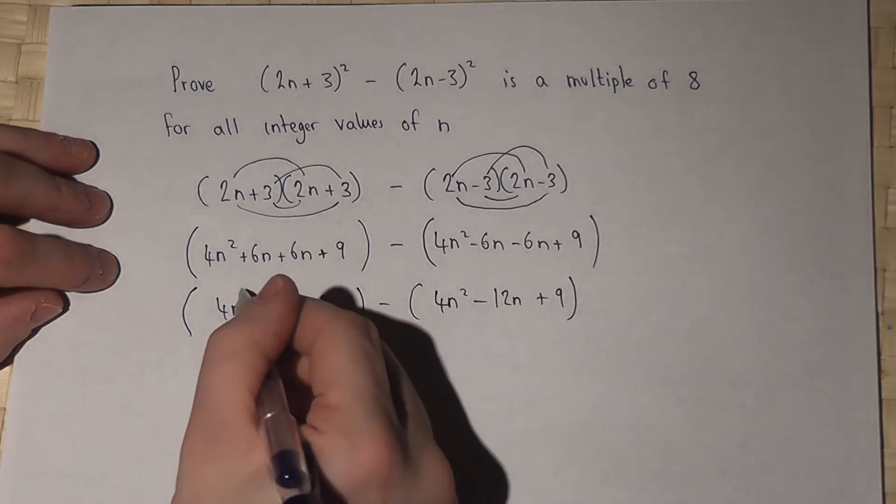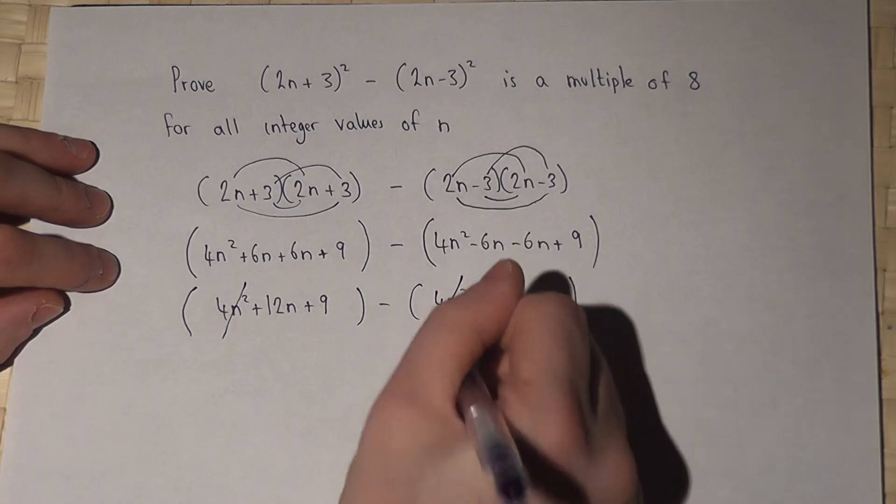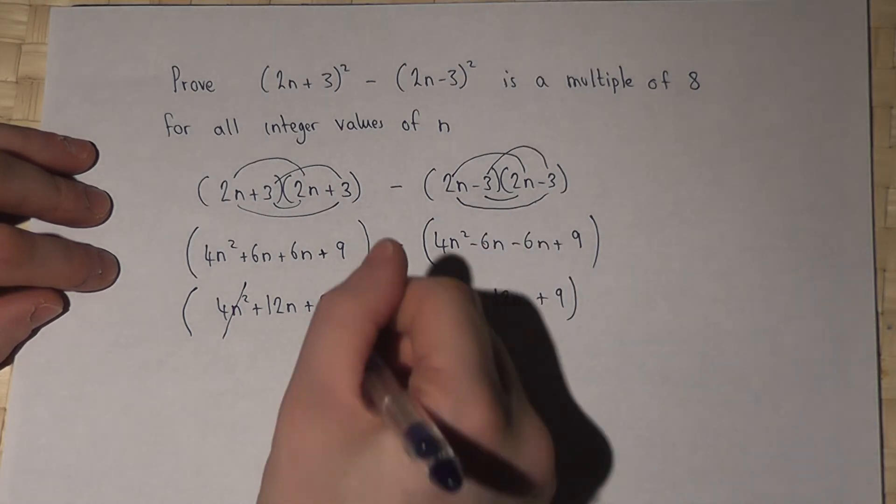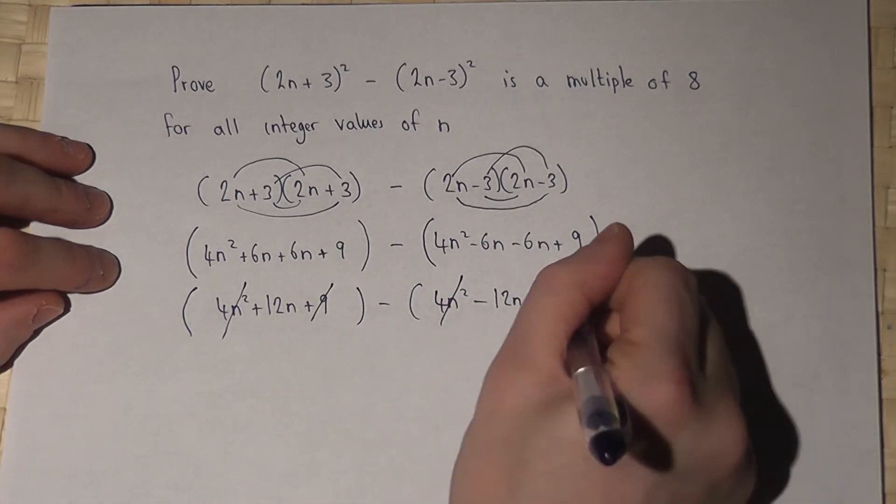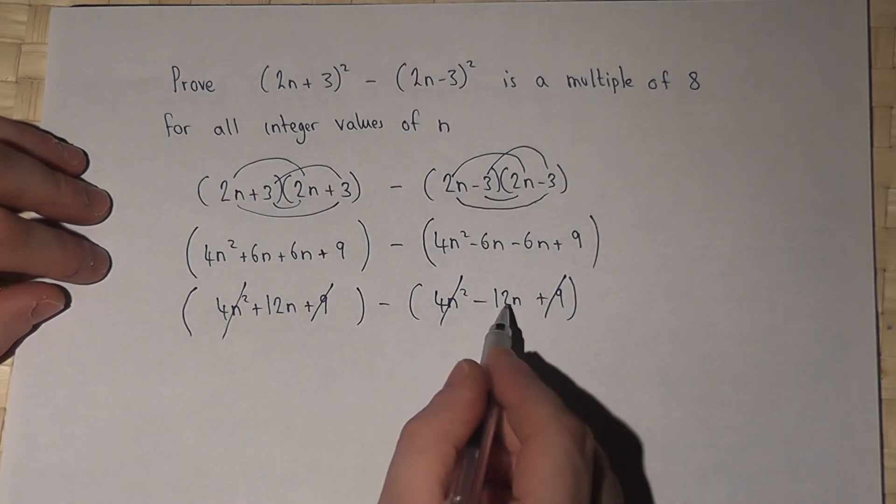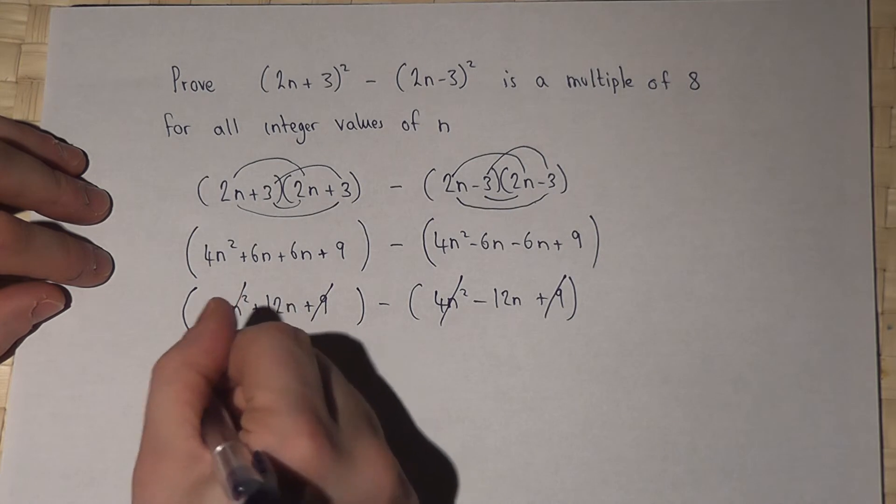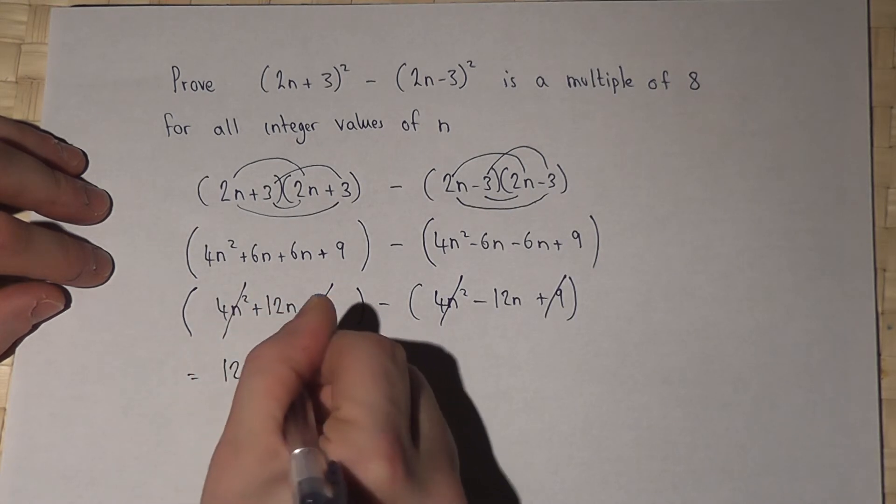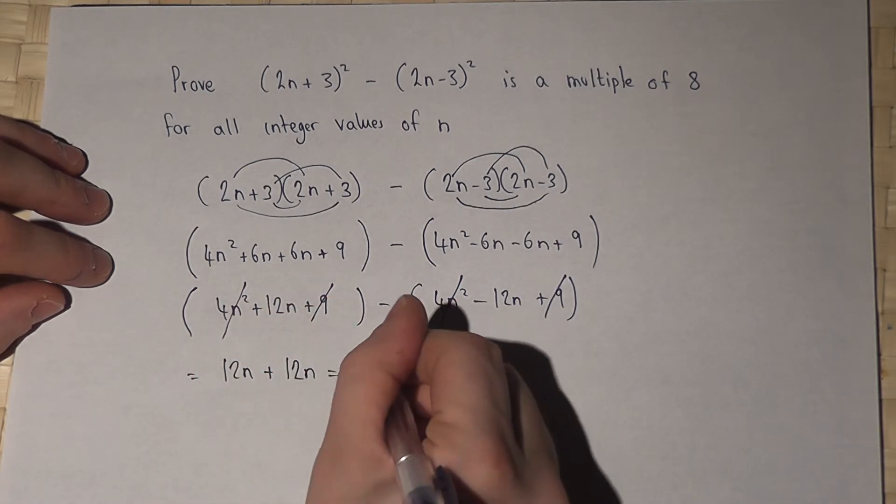Now then, 4n squared take away 4n squared cancels out. 9 take away 9 cancels out. But 12n take away minus 12n becomes 12n plus 12n, which equals 24n.